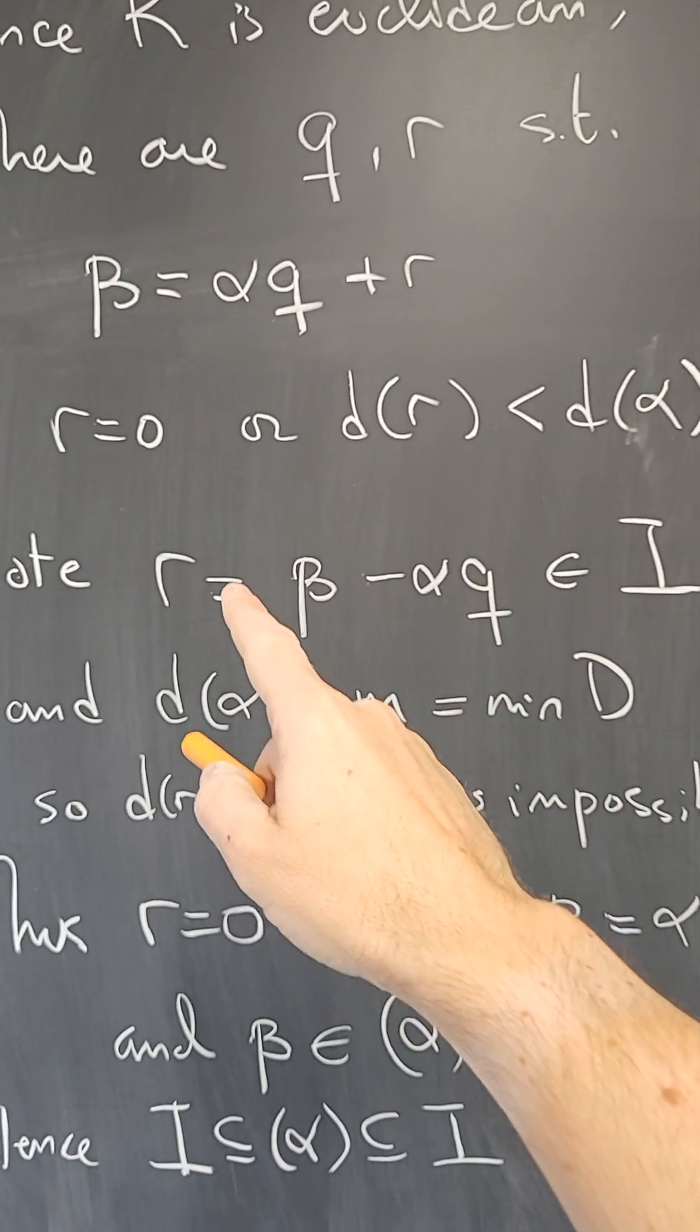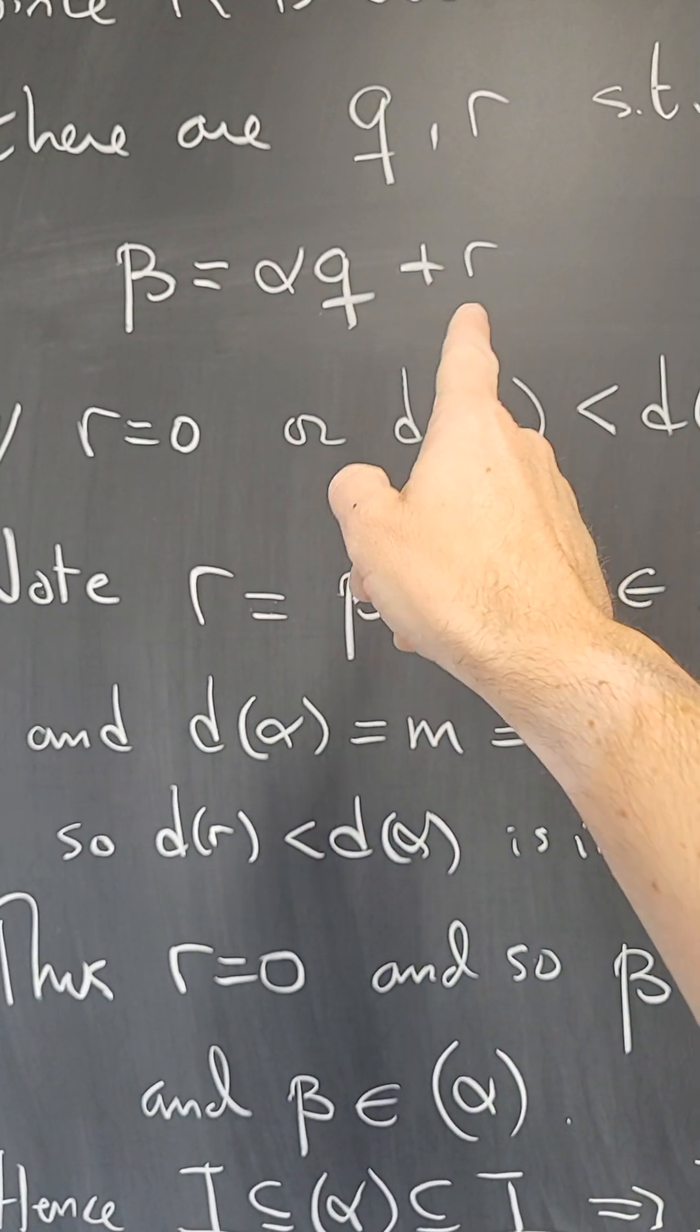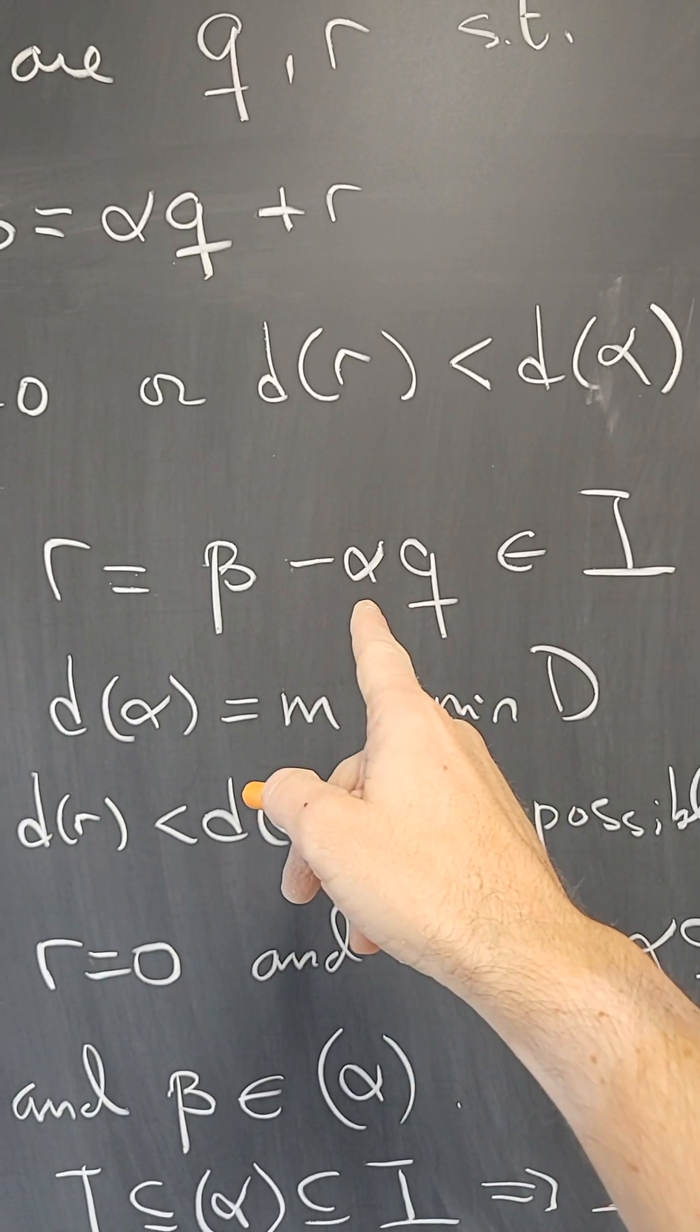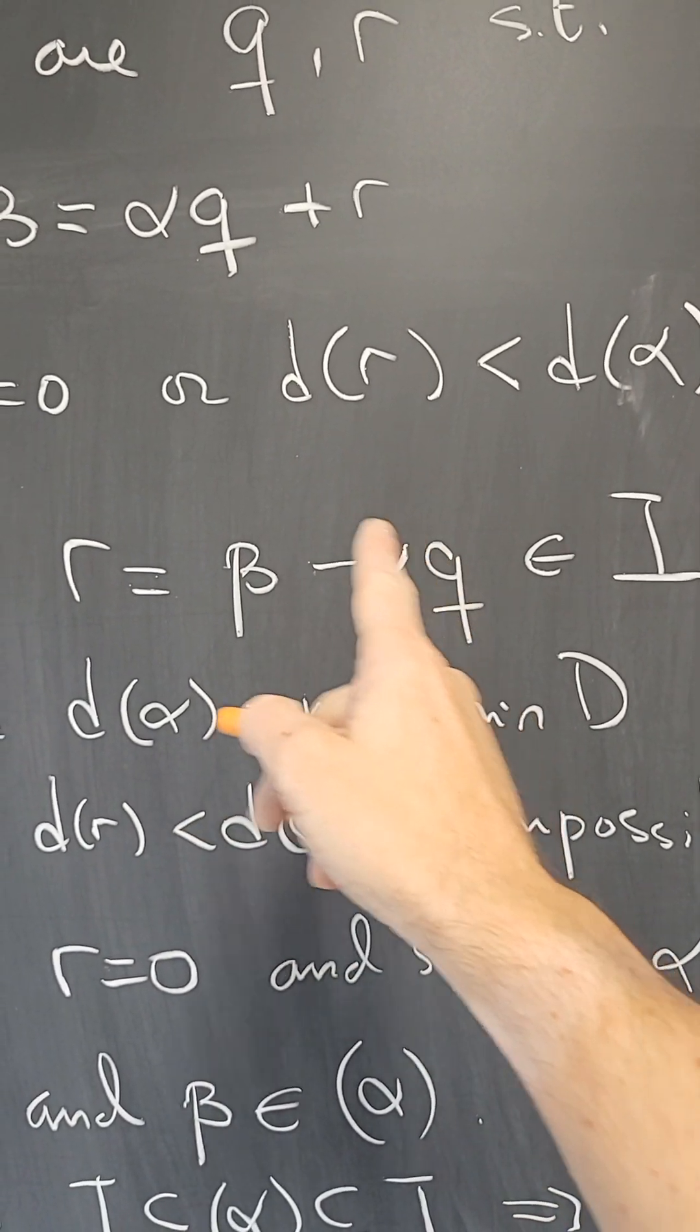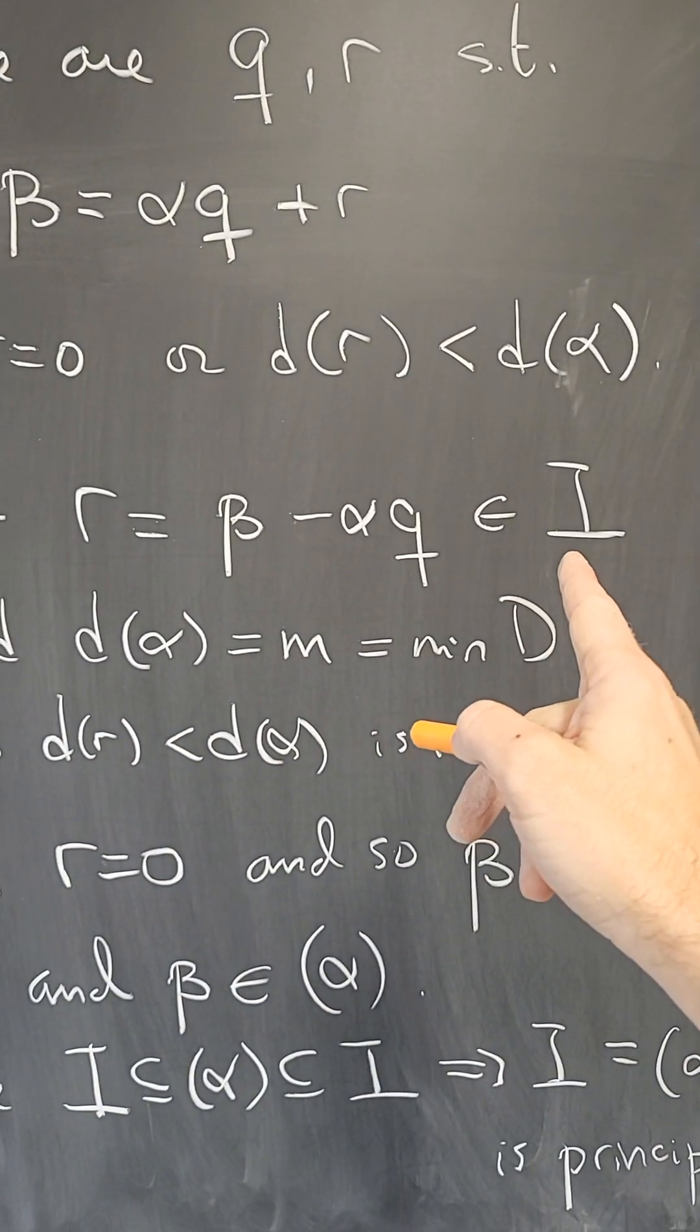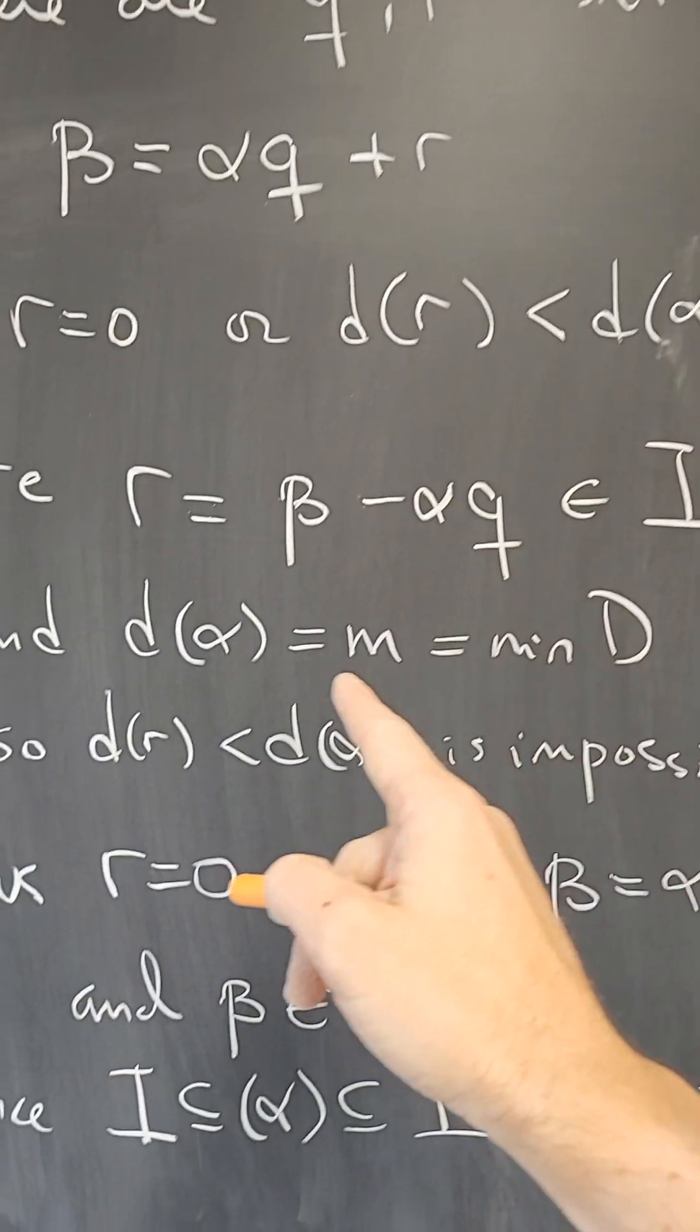But notice that R in here is beta minus alpha Q. Q is in the ring, alpha is in the ideal, and beta is in the ideal, so this element is in the ideal. So R is an element of the ideal such that D of R is less than D of alpha.